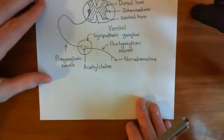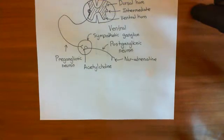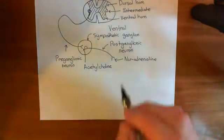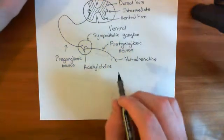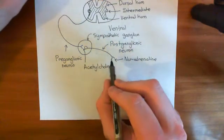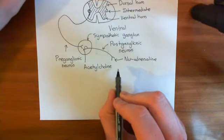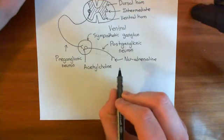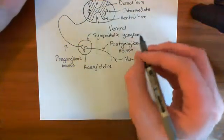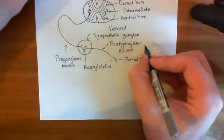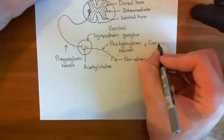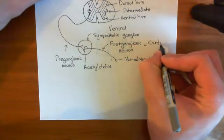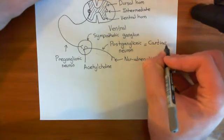The postganglionic neurons which innervate the heart — the neurons which are actually going to synapse with the cardiomyocytes — are called the cardiac nerves, or the cardiac sympathetic nerves.